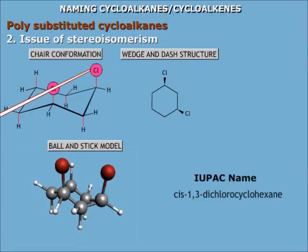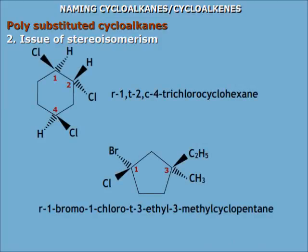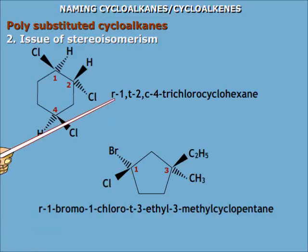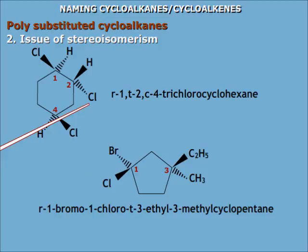When two substituents are on the same side of the plane, it is a cis isomer; otherwise it is a trans isomer. In more complex situations, the substituent having the lowest locant is taken as the reference orientation and is labelled 'r' followed by a dash and the locant number, specifying its geometry and position. Substituents on the same side as the reference are labelled 'c' (from cis), and substituents on the other side are labelled 't' (from trans).